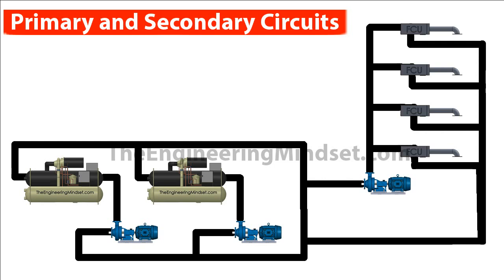Hey there guys, Paul here from TheEngineeringMindset.com. In this video we are going to be looking at what a primary and secondary system are in the heating and cooling circuits within a centralized HVAC system. As you can see on the screen, we've put up a basic schematic of the pipework for a typical centralized heating or cooling system in a commercial building. This system has two circuits known as the primary and the secondary circuits.